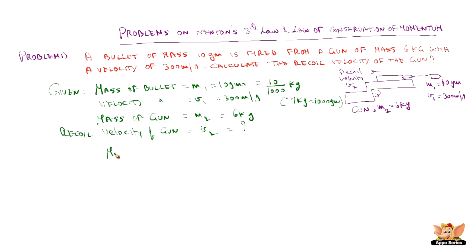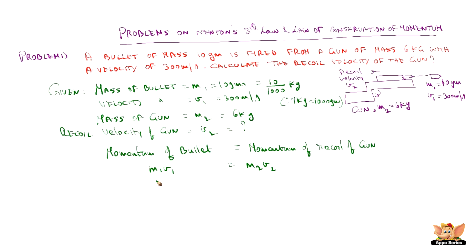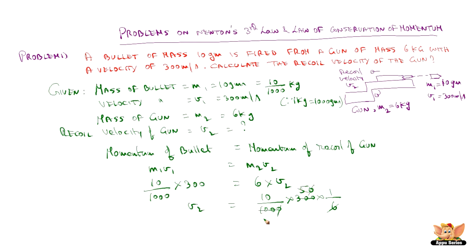From the law of conservation of momentum, momentum of bullet is equal to momentum of recoil. Hence M1 V1 equals M2 V2. So M1 is 10 by 1000, V1 is 300, M2 is 6, therefore V2 equals (10/1000) × 300 × (1/6), which gives 0.5 meters per second. So the recoil velocity V2 is 0.5 meters per second.